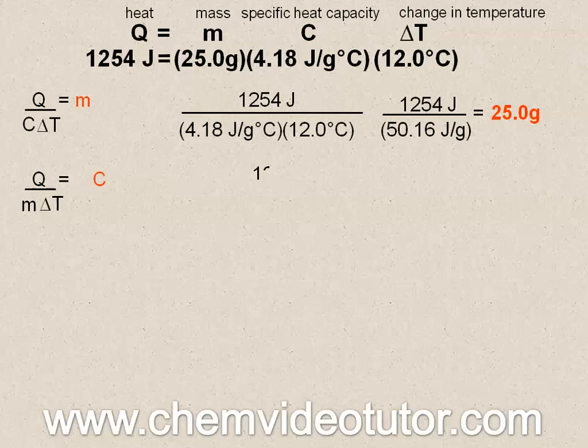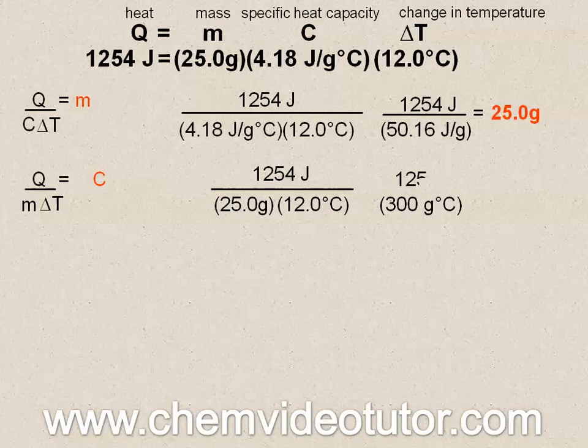Using the same numbers from above, we would plug in the values for heat, mass, and change in temperature. After multiplying the bottom numbers together, your numerical setup should look like this so that when you divide, you get the specific heat capacity of 4.18 joules per gram degree Celsius.